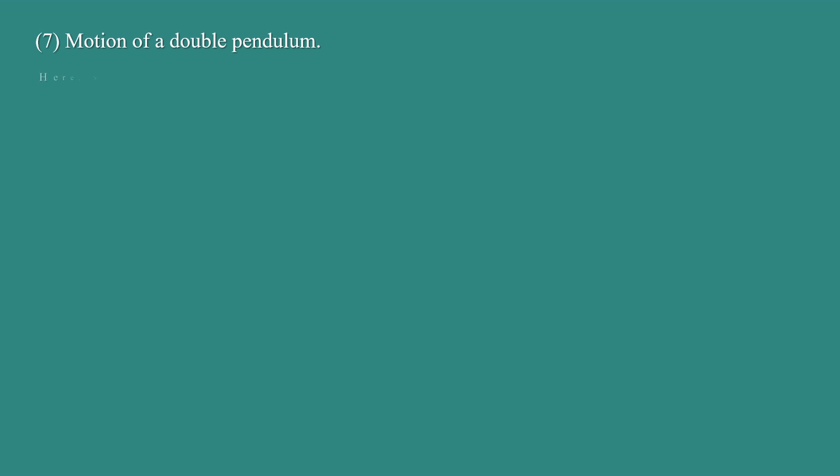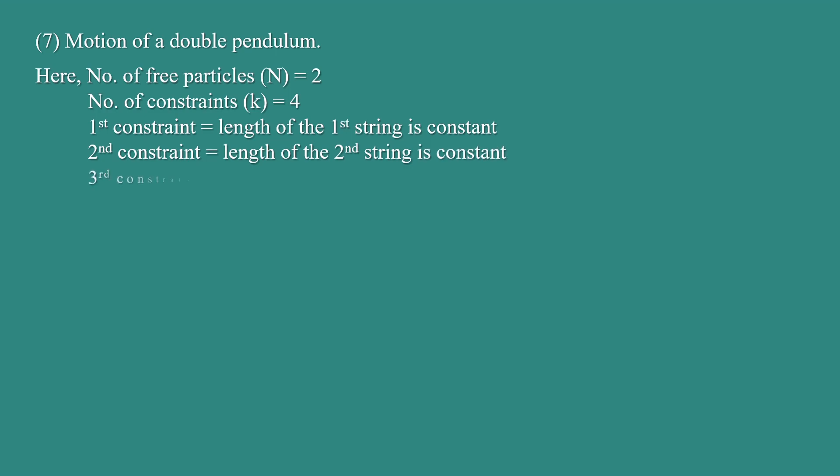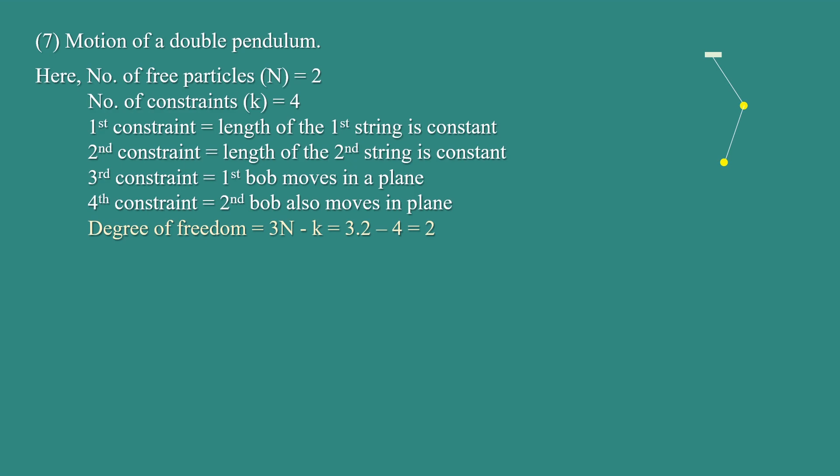Motion of a double pendulum. Here, the number of free particles N = 2 and the number of constraints K = 4. The first constraint is that the length of the first string is constant, the second constraint is that the length of the second string is constant, the third constraint is that the first bob moves in a plane, and the fourth constraint is that the second bob also moves in a plane. Therefore, degree of freedom = 3N − K = 3(2) − 4 = 2.